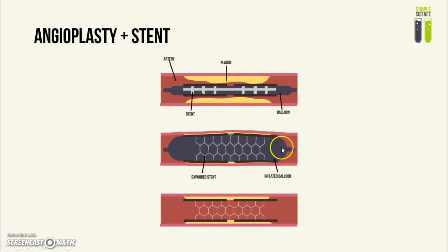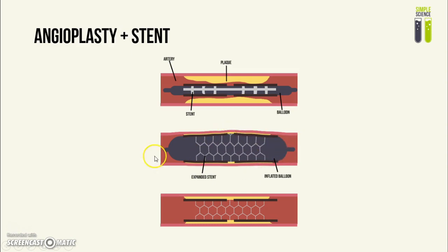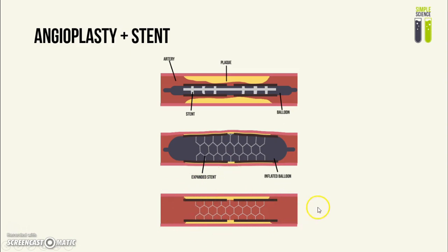Once it is in there, the balloon is then inflated, which expands the stent or the mesh of metal, which then pushes the plaque against the wall of the arteries so that it cannot block blood flow anymore. The balloon is then removed from the coronary artery, leaving just the stent pushing against the plaque so that blood flow is not blocked.